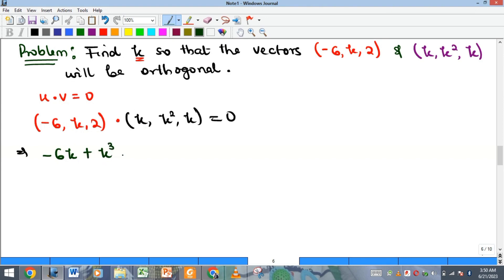And then 2 multiplied by k gives us 2k. All should be equal to zero. Now from that equation you can see that we have k to the third order, that is to say we are expecting three values for k.